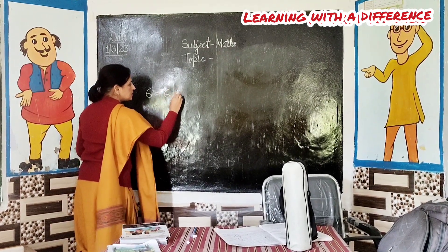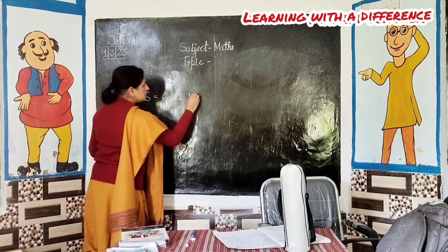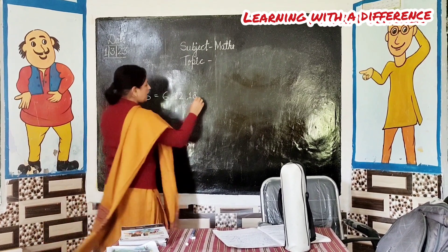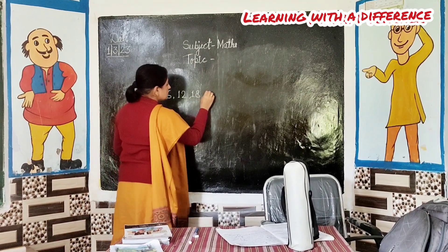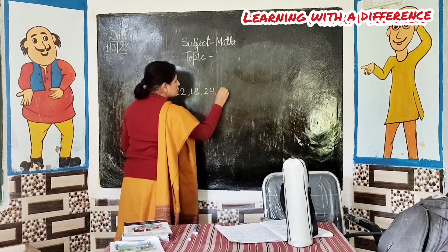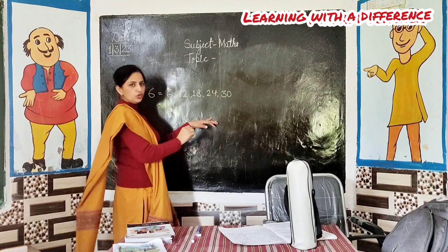6 ones are 6. 6 twos are 12. 6 threes are 18. Very good. 6 fours are 24. 6 fives are 30. Very good.